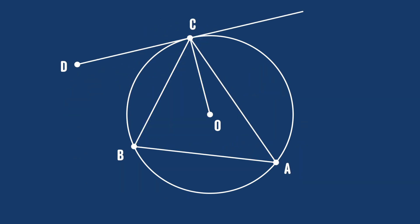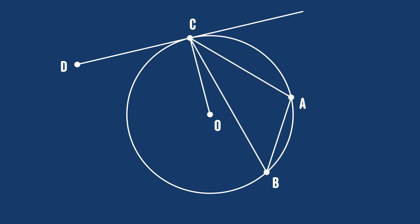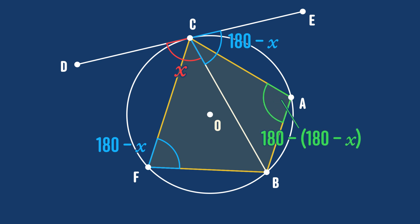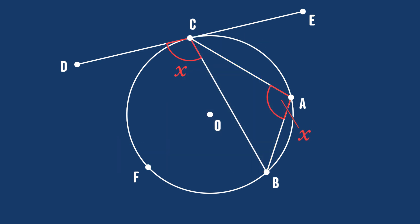You might ask if this still works if the chord BC is on the other side of the centre of the circle — and it does, but again we need to adapt the proof slightly. The easiest way is to label another point E on the tangent and another point F on the circle. If angle DCB is X, then angle BCE is 180 minus X. By the case of the alternate segment theorem already proved, angle CFB is also 180 minus X. Then using the fact that ACFB is a cyclic quadrilateral, and opposite angles sum to 180 degrees, angle BAC is 180 minus (180 minus X), which is just X — equal to angle BCD. So the alternate segment theorem really does work in this case as well.